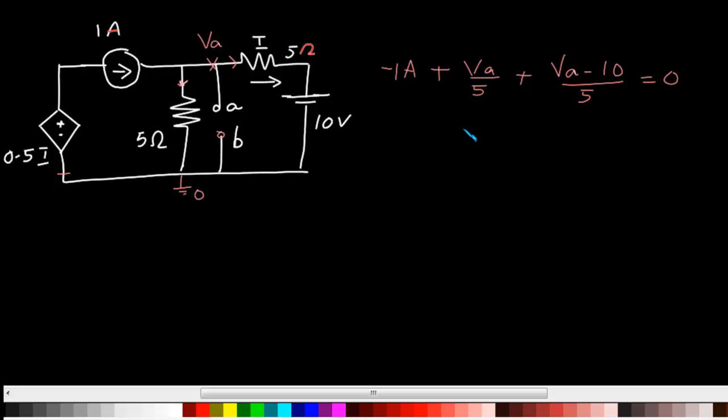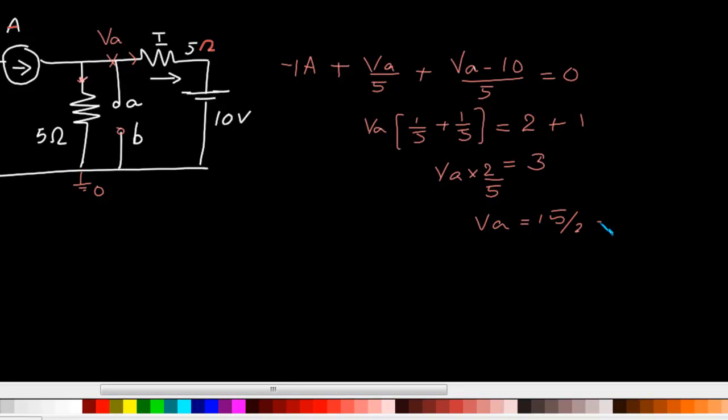We have one unknown, we have one equation. That is Va into 1 by 5 plus 1 by 5, the two terms from here and here, equal to 10 by 5 that is 2 plus 1 that is equal to 3. Now from here, Va into 2 by 5, that means Va equal to 15 by 2 that is 7.5 volt, which is nothing but our Thevenin's voltage looking into the terminal A and B.